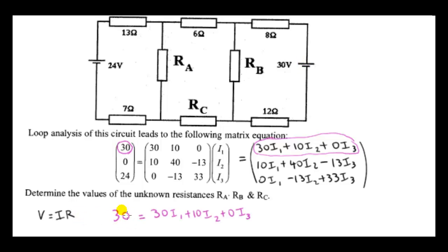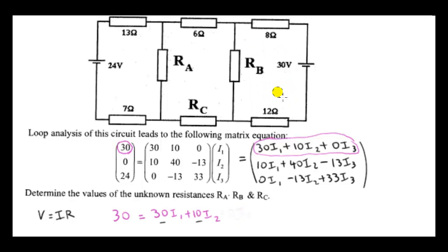The voltage source in any loop is the sum of the voltage drops across the components in that loop. The voltage drop across a component is given by V equals IR, current times resistance, or V equals RI. Now you can see that the voltage drop due to current I3 is zero — we have zero times I3, which is just zero. So that tells us that current I3 does not flow anywhere in this loop.